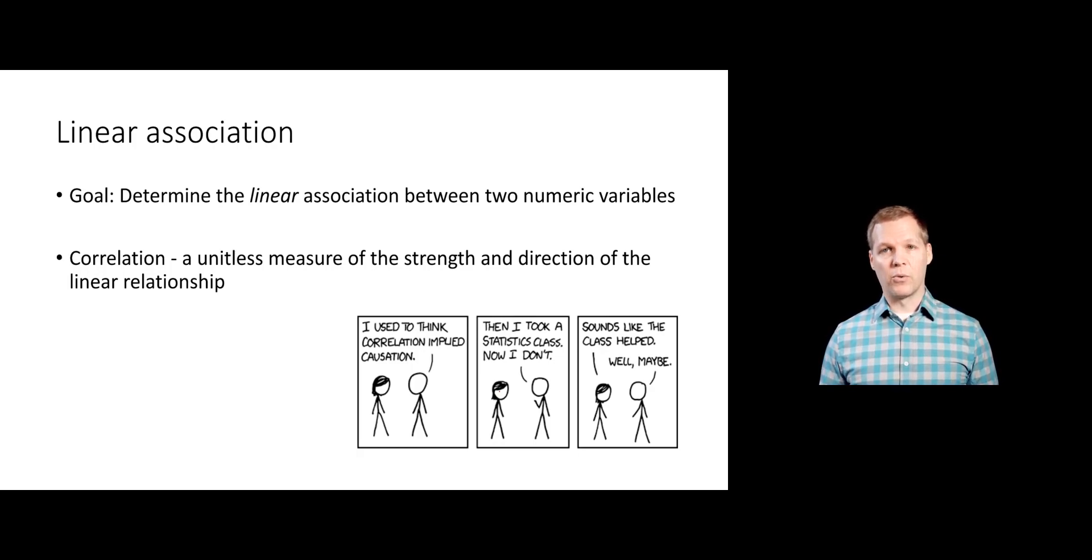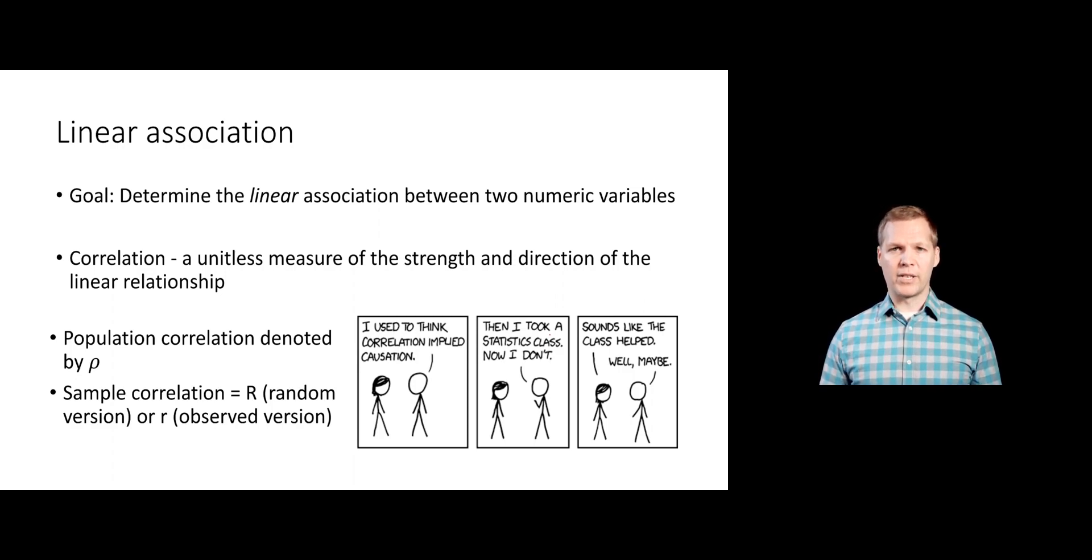Correlation is a unitless measure of the strength and direction of the linear relationship. We saw how to create this using PROC CORR, but we just didn't look at the tests and intervals for the population value itself. The population value, if I could measure everybody from my population and look at the correlation, we call that value rho. This is the Greek symbol rho.